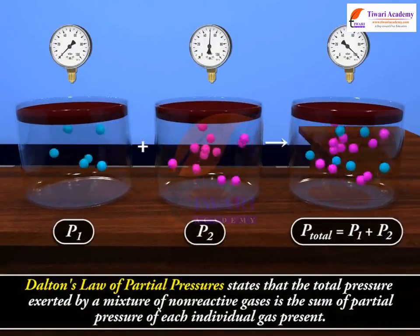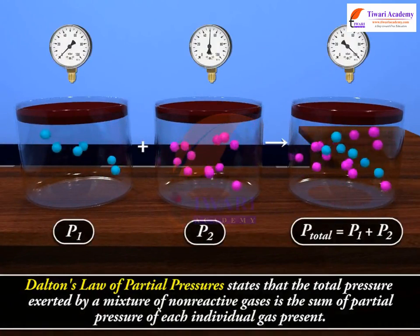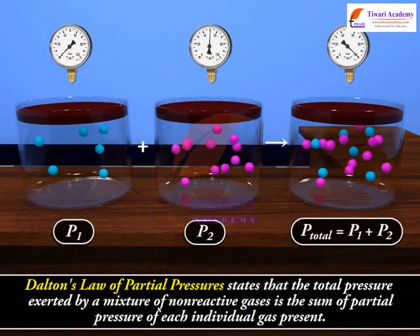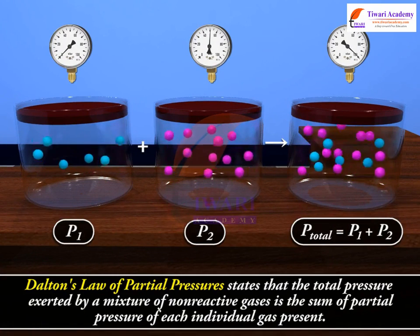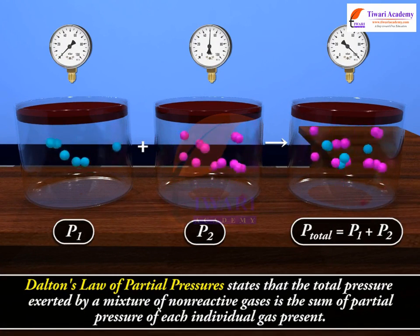Dalton's Law of Partial Pressures states that the total pressure exerted by a mixture of non-reactive gases is the sum of partial pressure of each individual gas present.